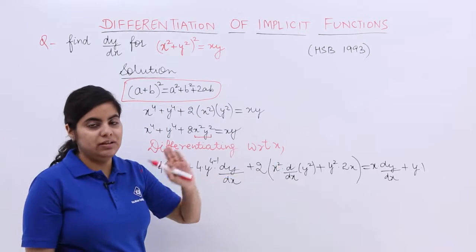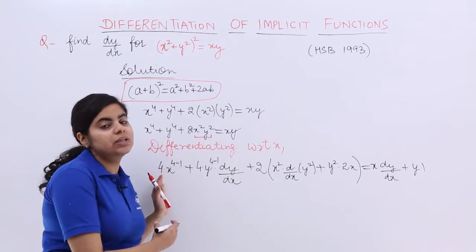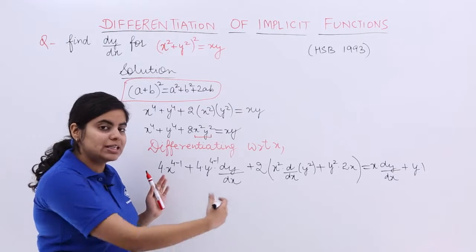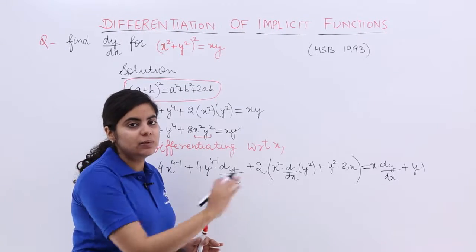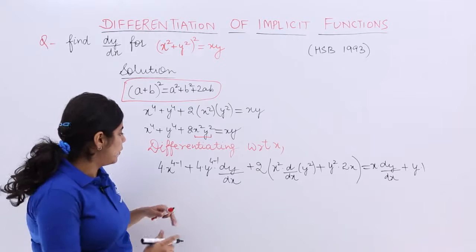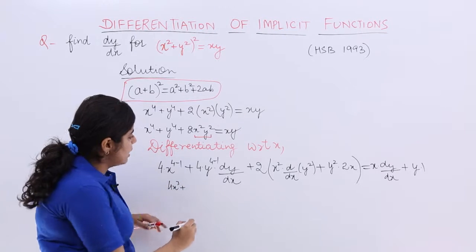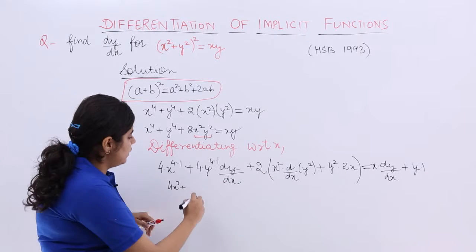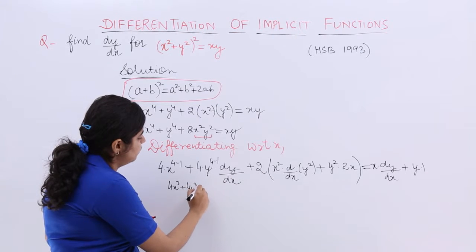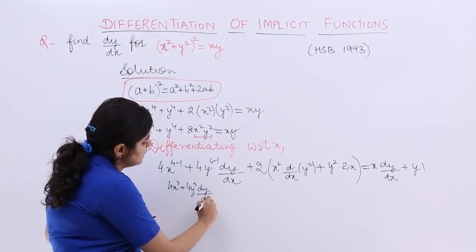Now wherever dy/dx is there, let's keep the things with itself. Let's keep the terms together. And the other terms to be taken on the other side of the equal to. Now it becomes 4x³. And what other thing is there? Then we have 4y³ dy/dx.